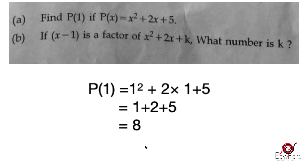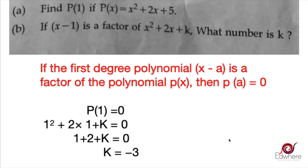Now let's take the next question: If x minus 1 is a factor of x squared plus 2x plus k, what number is k? For this, we recall the factor theorem: if the first degree polynomial x minus a is a factor of the polynomial p of x, then p of a is equal to 0.